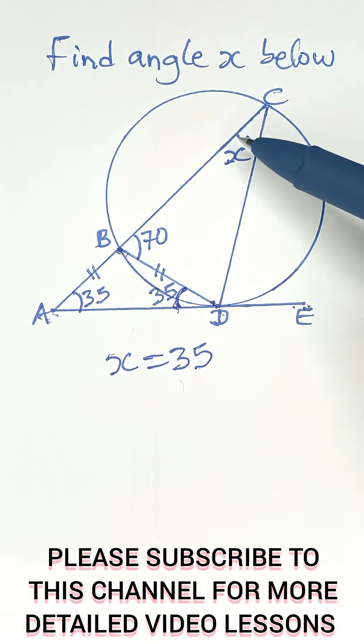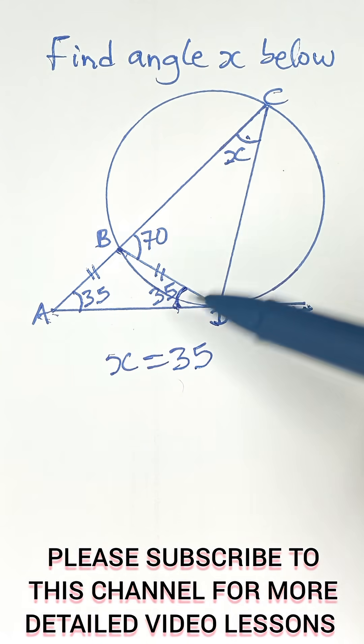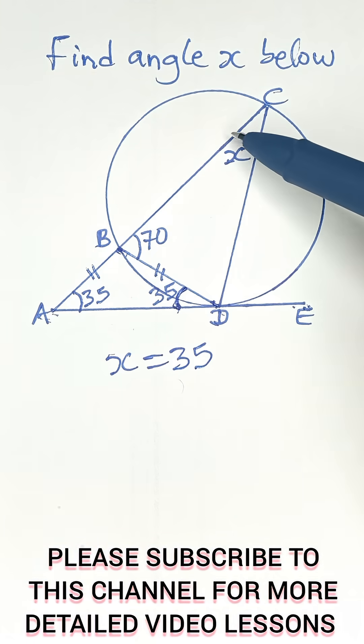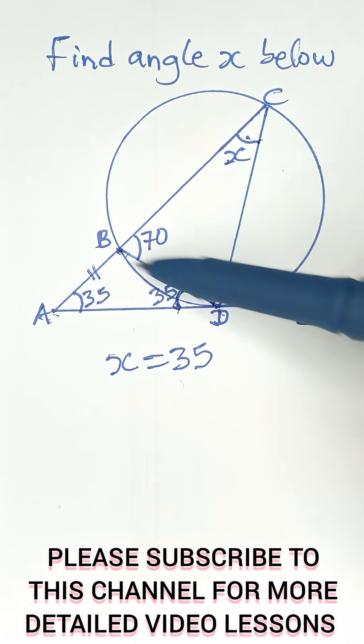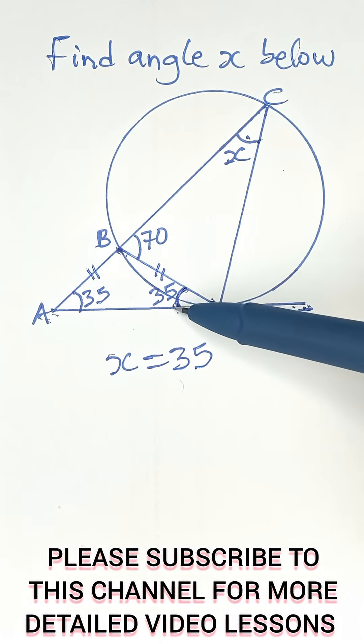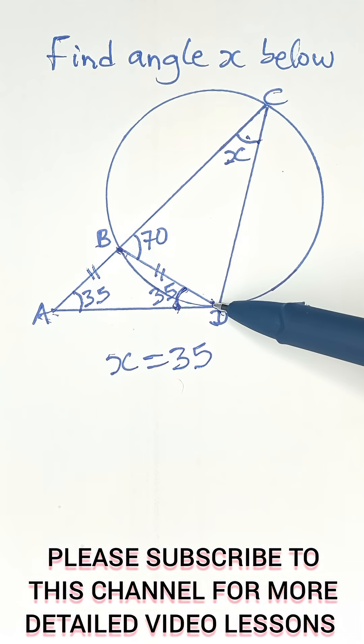Why? Because as this chord makes an angle with the tangent, it also makes the same angle inside the triangle it forms in the circle. Angles in alternate segments are equal.